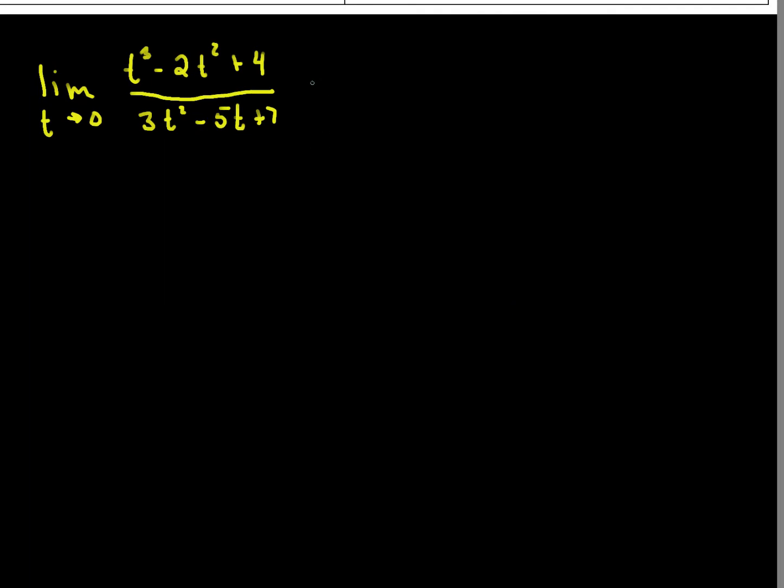So, this is equal to the limit as t goes to 0 of t cubed minus 2t squared plus 4, divided by the limit as t goes to 0 of 3t squared minus 5t plus 7.